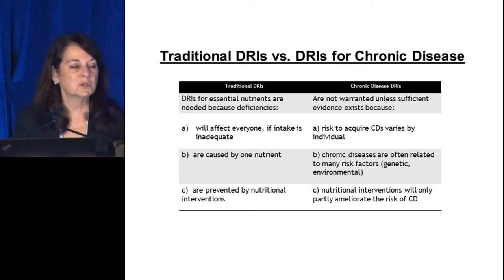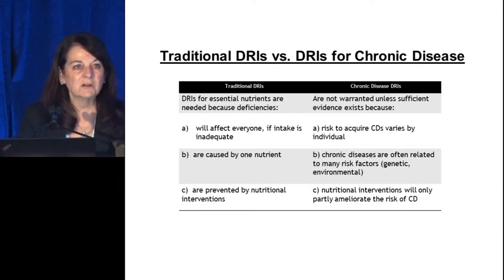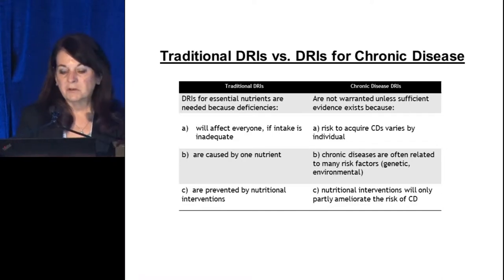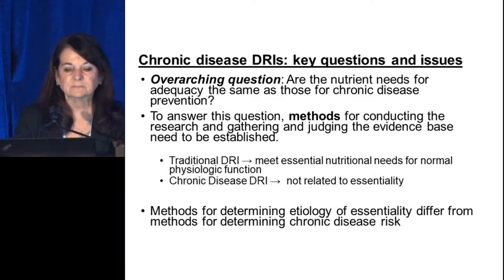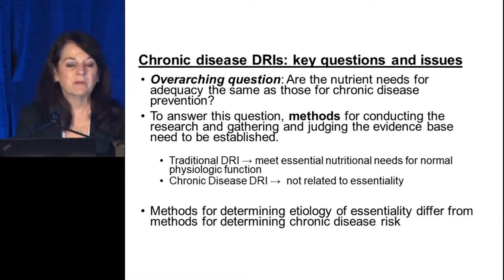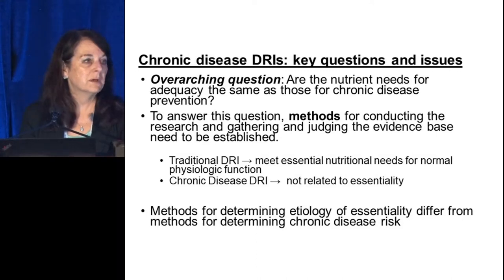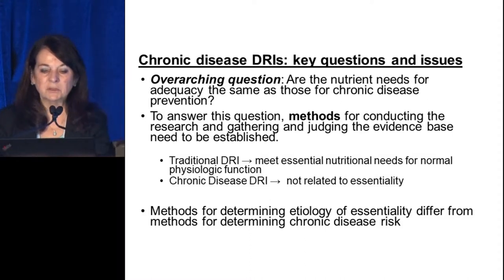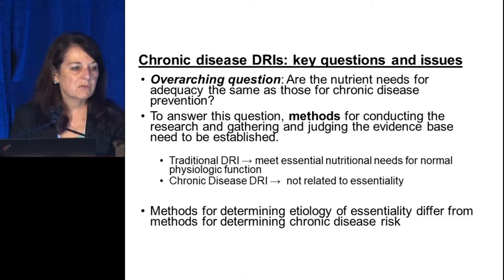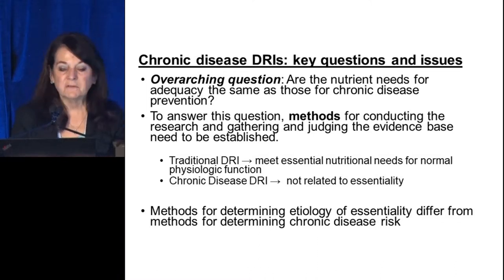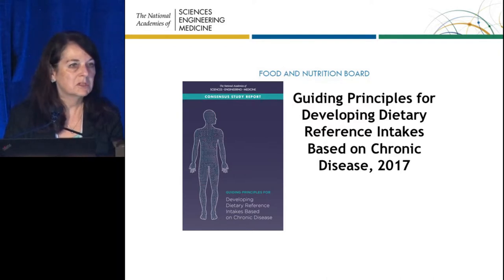Chronic disease DRIs are much different because the risk of developing a chronic disease varies by individual. Chronic diseases are often related to many risk factors such as genetic characteristics and environmental risk factors, and nutritional interventions will only partly ameliorate the risk. The overarching question is: are the nutrient needs for adequacy the same as those for chronic disease prevention? Methods for conducting research and gathering and judging the evidence base need to be established. That was the motivation behind this report published in 2017.